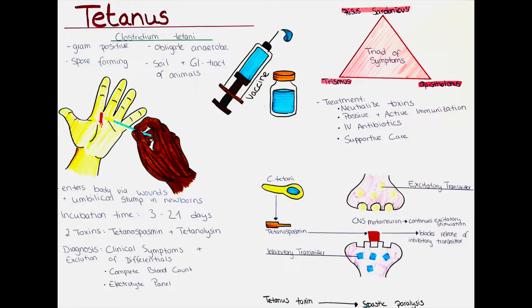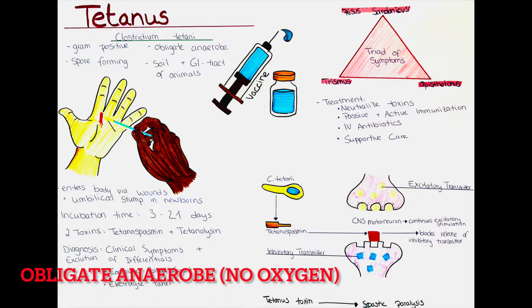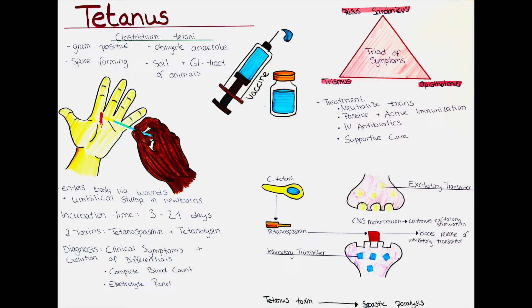Another very important feature is that it is an obligate anaerobe. This means that it can only survive and multiply in environments that are closed off from oxygen. This also explains why deep wounds and puncture wounds are especially dangerous in the context of tetanus.